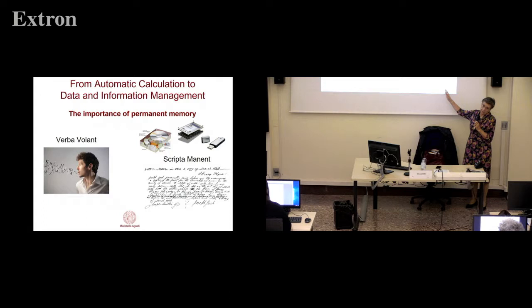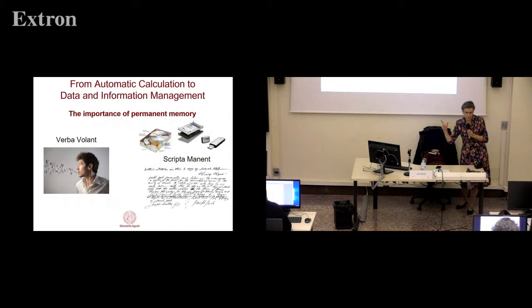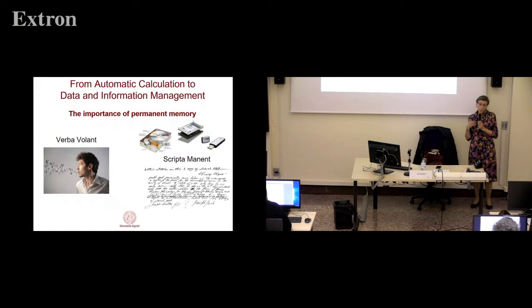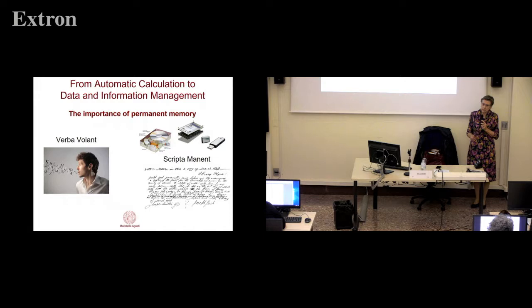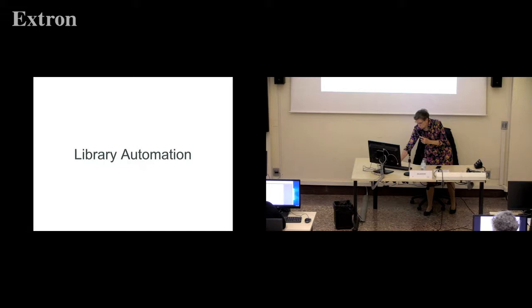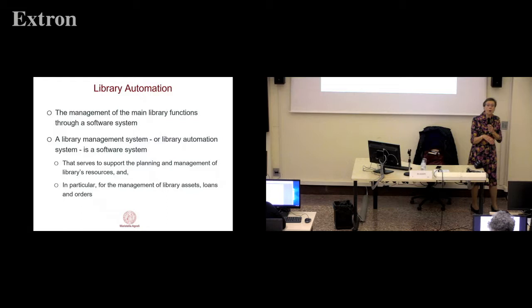So we can imagine new applications — not only calculating rocket trajectories or bank transactions, but also storing data related to the binary representation of information. Starting in the 1960s, these new types of applications began. Library automation is one of those applications.